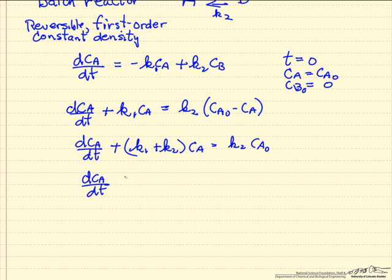To do the solution, I'll define a couple of variables to make it easier. Alpha is a constant because k1 and k2 are constants. They're not dependent on CA. And the right side we'll call beta, another constant.